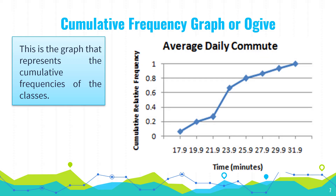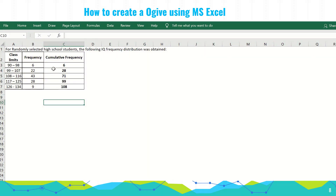After the frequency polygon, we will now create the cumulative frequency graph or ogive. This is the graph that represents the cumulative frequencies of the classes. To use this graph, you need to determine the cumulative frequency of the classes. Remember that cumulative frequency is the sum of the frequencies accumulated up to the upper boundary of a class in the distribution.